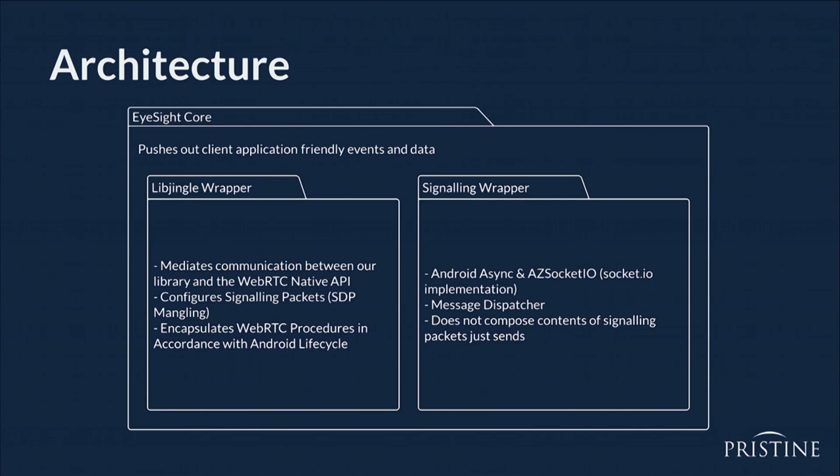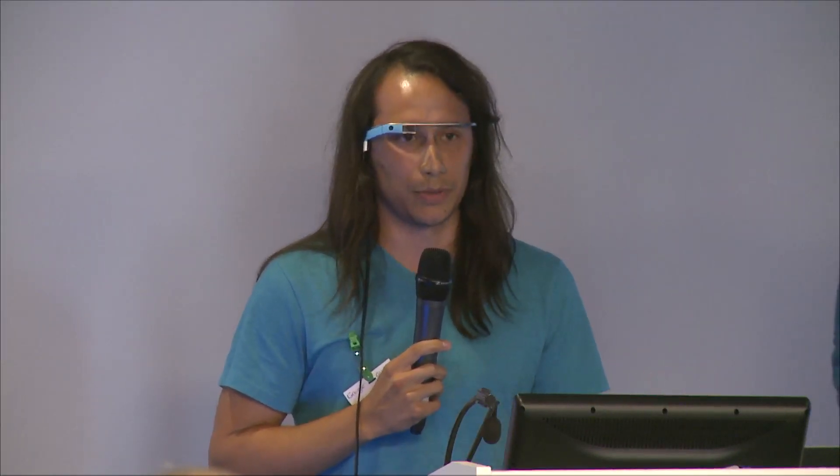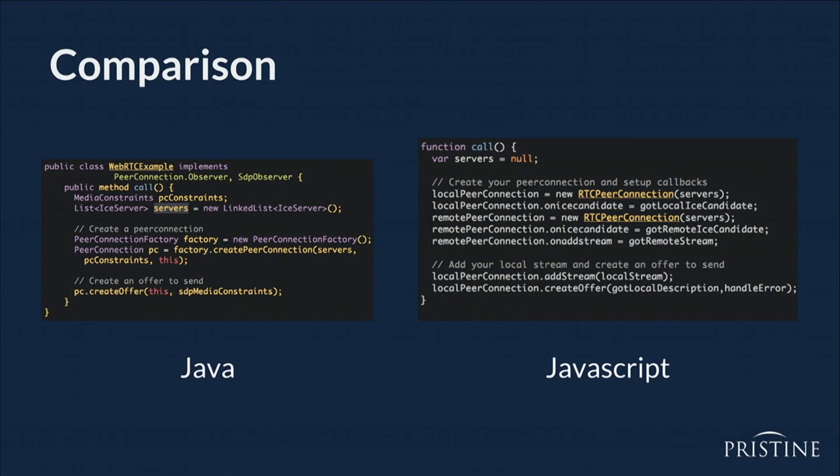The signaling wrapper is much simpler. We implement Socket.io — a lot of people have been talking about how they use WebSockets. For Android we use Android Async, which is a very fast Socket.io implementation for Android. On iOS we use azsocket.io. This component is just a message dispatcher — it doesn't compose messages; it just gets a message from our peer connection wrapper and sends it across the line. I want to briefly show what I look at on a day-to-day basis compared to the standard WebRTC API in JavaScript, and as you can see it's not really much different.